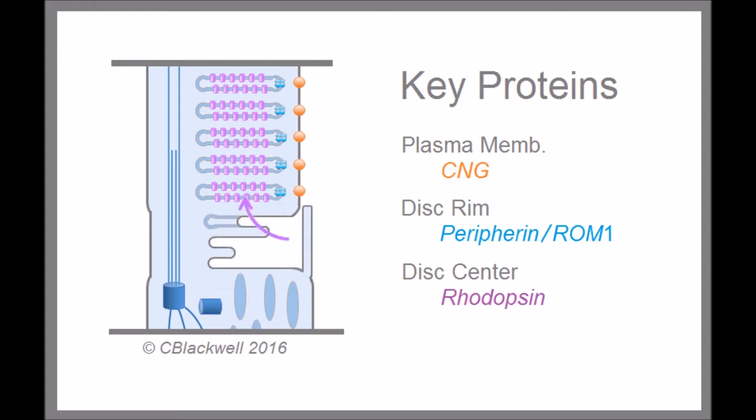Rhodopsin molecules occupy half the volume of each disc. Mice that have the rhodopsin gene removed produce thin, disorganized outer segments.